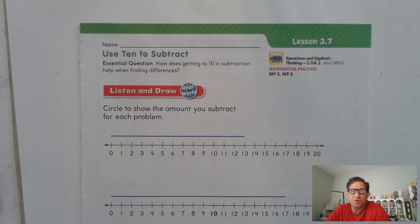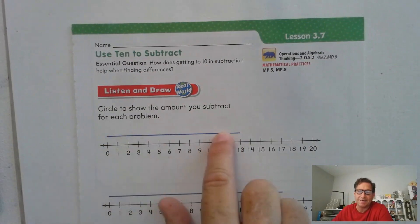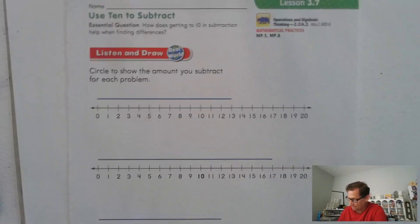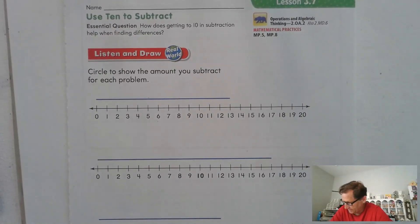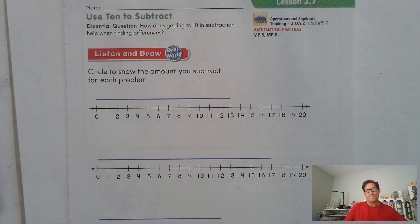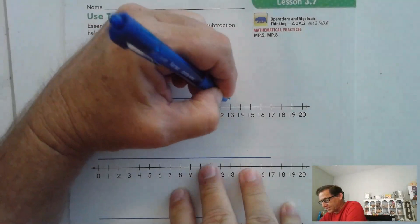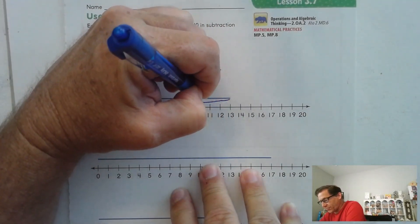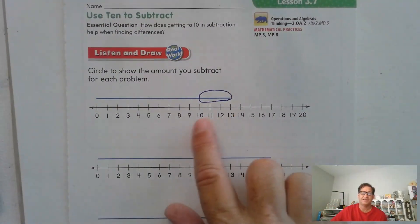So listen and draw. Circle to show the amount you subtract for each problem. I want you to circle which part of the blue line is being subtracted. Deveron has 13 crayons. He gives three crayons to Tyler. How many crayons does Deveron have now? We're going to subtract. He gives three crayons to Tyler, so go ahead and circle the part of the blue line — that would show taking away three. If we start at 13, we take away one, two, three. So 13 take away three would be 10.